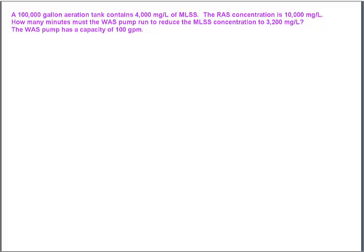In this problem, they're asking me how long the WAS pump has to run to reduce the mixed liquor suspended solids concentration. The information they give me is that I have a 100,000 gallon tank, and it currently has a concentration of 4,000 milligrams per liter. I'm trying to reduce that down to 3,200 milligrams per liter. Assuming there is no influent coming in while I'm pumping down and I'm not growing any more biomass, this just becomes a simple mass balance problem.